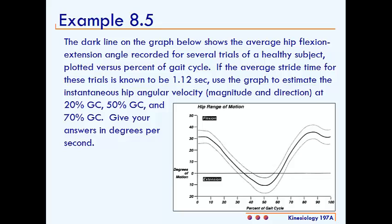This is example 8.5. The dark line on the graph below shows the average hip flexion extension angle recorded for several trials of a healthy subject.